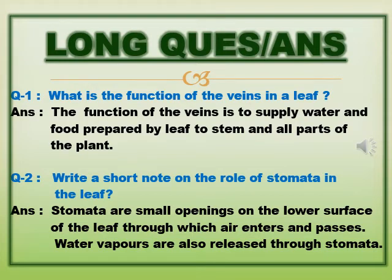Let's start the question answer. Question number 1: What is the function of the vein? The function of the vein is to supply water and food prepared by the leaf to the stem and all parts of the plant. Question number 2: Write a short note on the role of stomata in the leaf. Stomata are small openings on the lower surface of the leaf through which air enters and passes. Water vapors are also released through stomata.